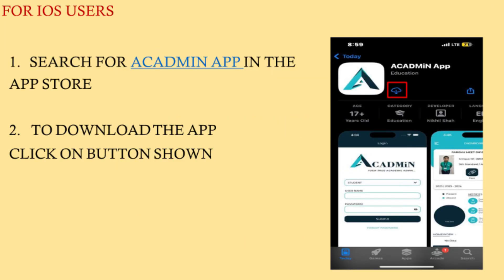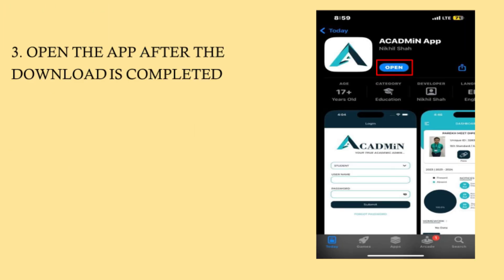If you are an iOS user, search for Academy app in the App Store. To download the app, click on the button shown in the image. Open the app once the download is complete.